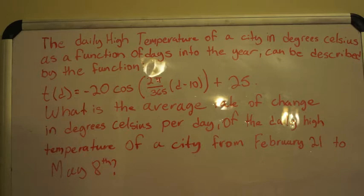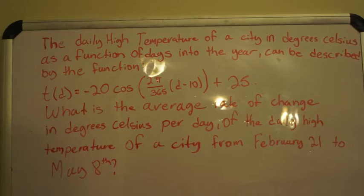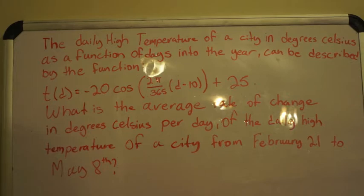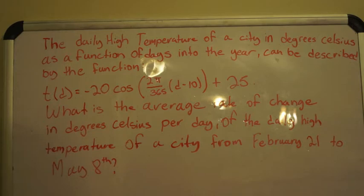Let's take a closer look at this question to find out what we have to do. We are looking to find the average rate of change (AROC) of the temperature between February 21st and May 8th. To do this, we will use the equation given where t represents temperature and d represents the number of days into the year.